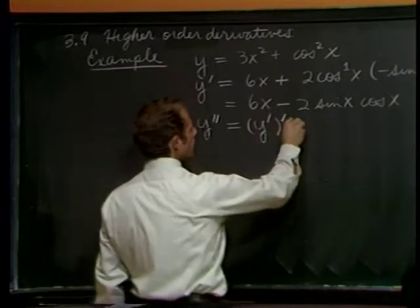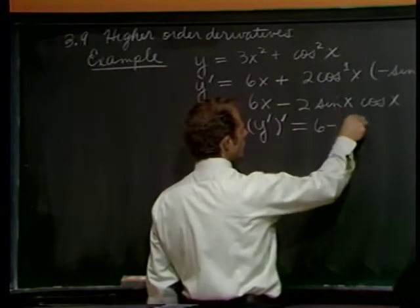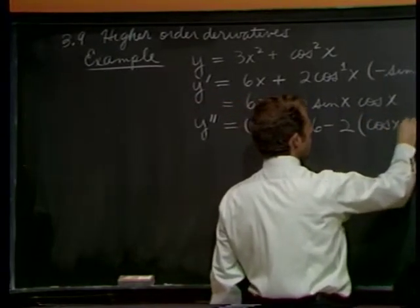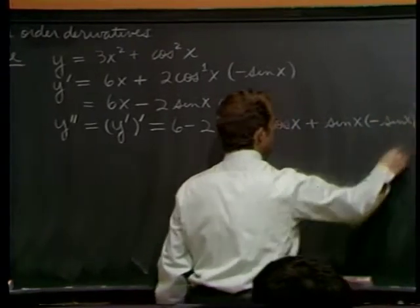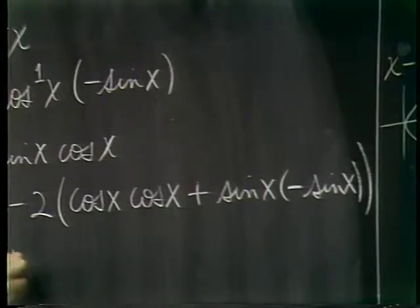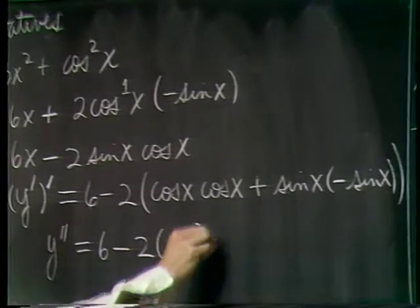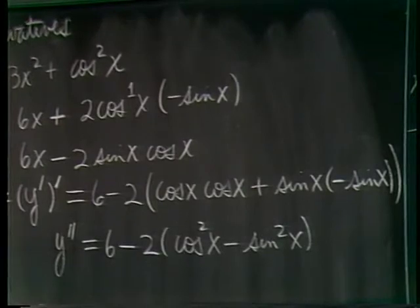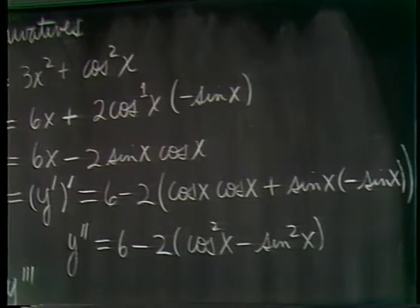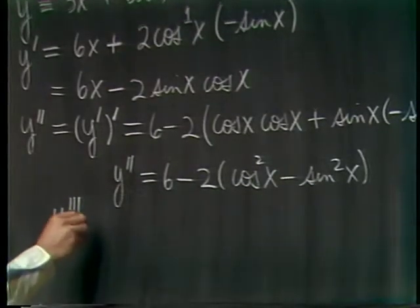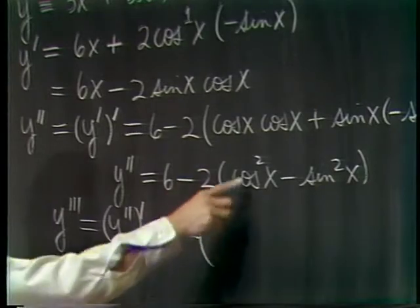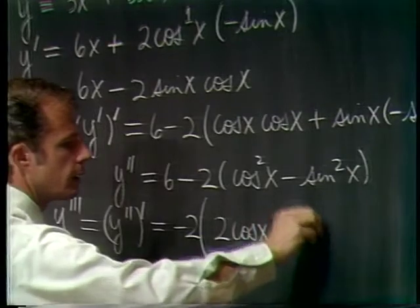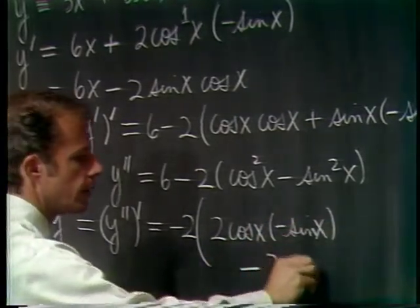Right above it sits y prime, so this is a fairly easy problem, 6 minus 2. Here comes product rule. Derivative of sine is a cosine, times a cosine, plus sine derivative of cosine. And so y double prime is 6 minus 2 cosine squared x minus sine squared x. And since it's not too bad looking, what do you think y triple prime is? It's a good derivative of the derivative. We already have a couple of them here, so it's y double prime prime, and now we need to take this derivative over here. It'd be a minus 2 quantity, 2 cosine to the first, times derivative of cosine, minus 2 sine to the first, derivative of sine.